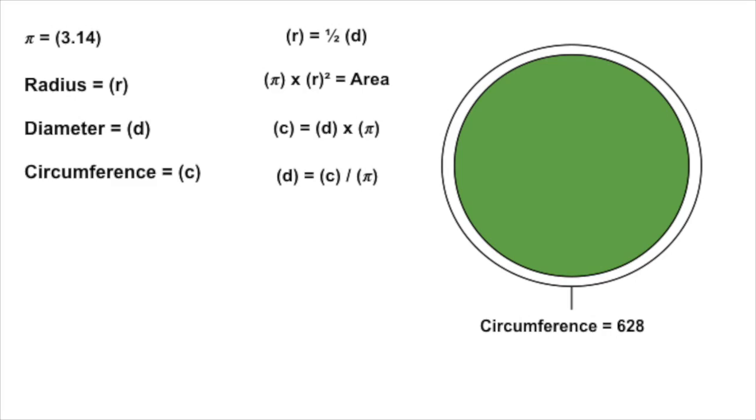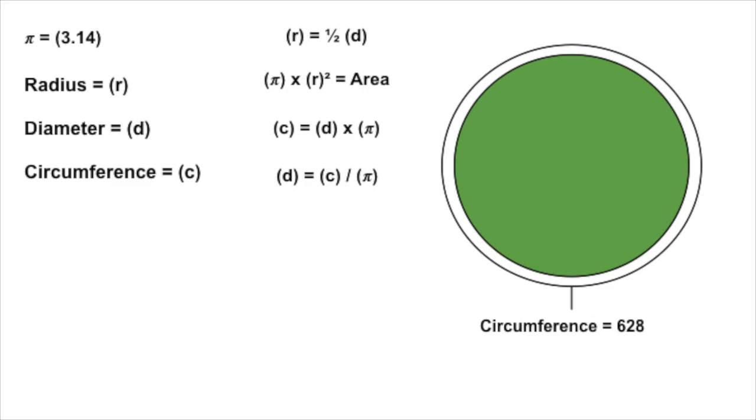Time for the toughest one yet, but I'm confident you can handle it. Let's imagine you have a circle and you know the circumference — remember, that's the length of the outer edge of the circle going all the way around. The circumference is 628 feet. So what's the area? It's easier than you probably think. Let me bring up the formula one more time so they'll be on the screen when you pause this clip. Go ahead and hit pause, and I'll see you in a few minutes when you're ready.